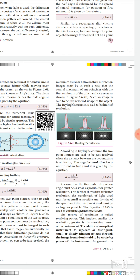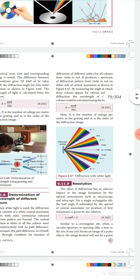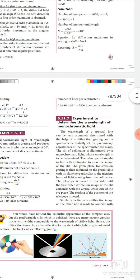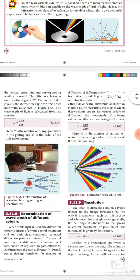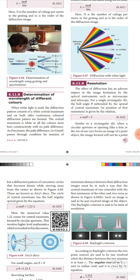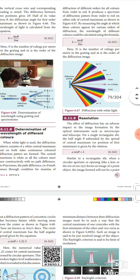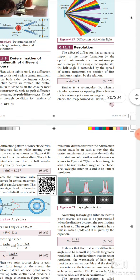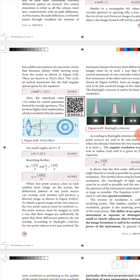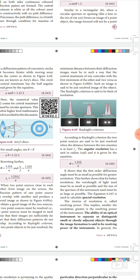Today we saw about Fresnel's distance: Z = A²/2λ. Then we saw the difference between interference and diffraction. Finally, we saw about resolution — the Airy disc, angular resolution θ = 1.22λ/A, and spatial resolution r₀ = 1.22λf/A. I hope you all complete the record. Study the questions given and come. Thank you, students.